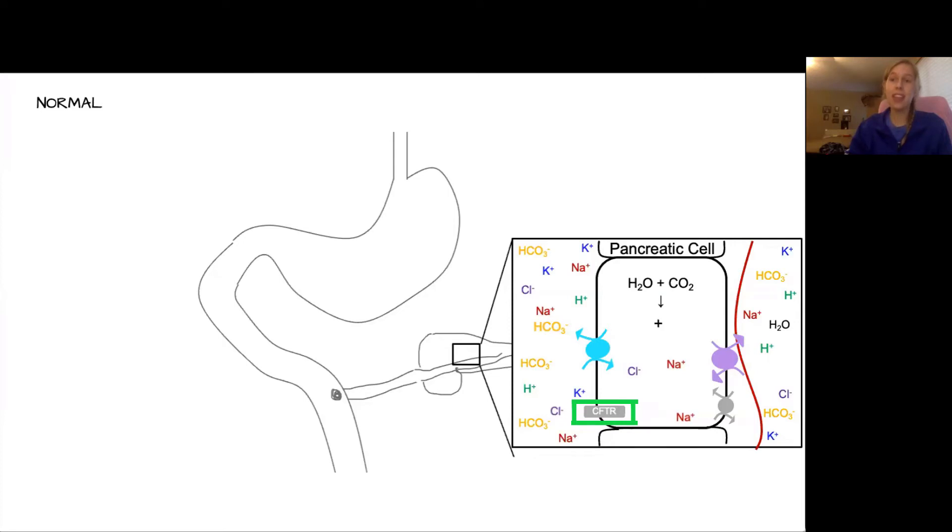As a side note, this is also where we have the CFTR channel that lets chloride into the pancreatic duct, and this is why we can get pancreatic problems with cystic fibrosis.